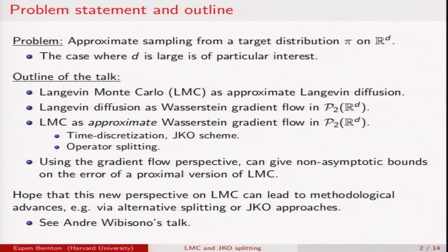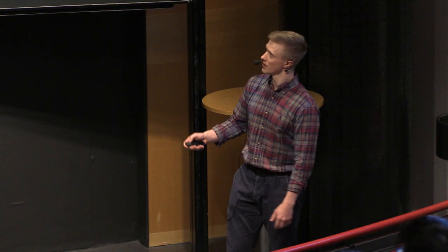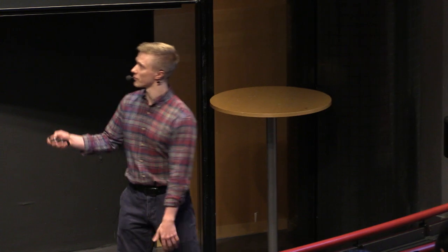The problem that we concern ourselves with is that of approximate sampling from a target distribution pi on R^D. To sketch the outline of the talk I'll first introduce some Langevin Monte Carlo algorithms and tell you how they're motivated as approximate Langevin diffusion.